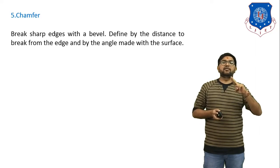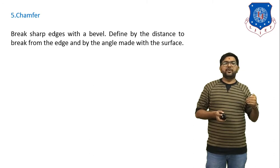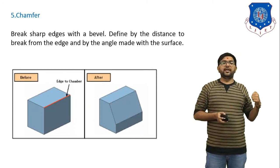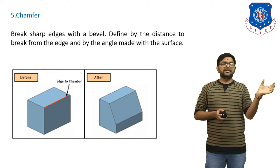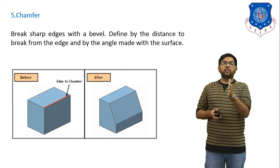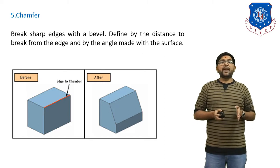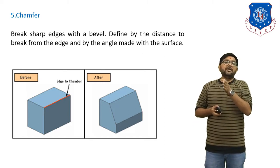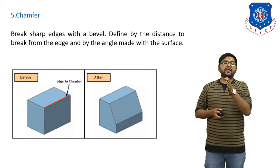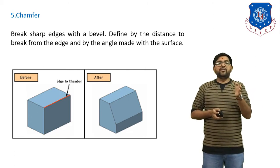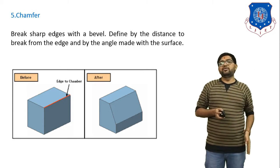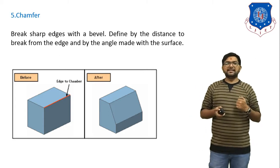Next is chamfer. In fillet we remove material in a round shape, but in chamfer we cut material with a straight cut. You can see in the figure that before chamfer the cube looks like the first figure, and after chamfer it looks like the second figure. The sharp edge is broken at a bevel defined by the distance from the edge and the angle made with the surface. You can apply a chamfer to any edge or to all edges at once.